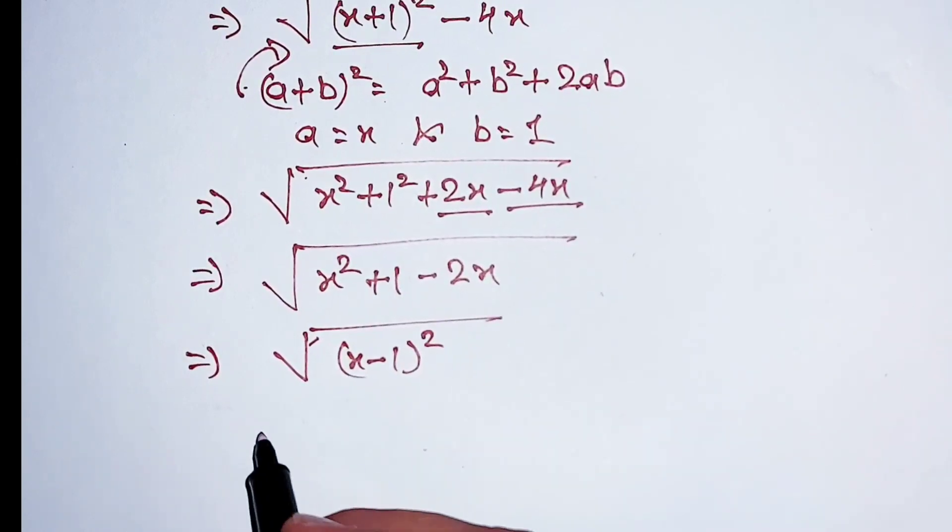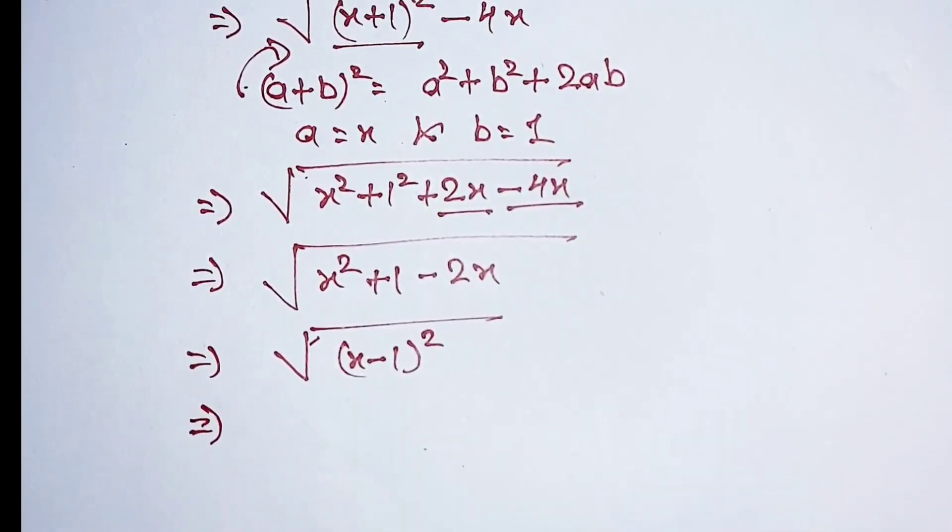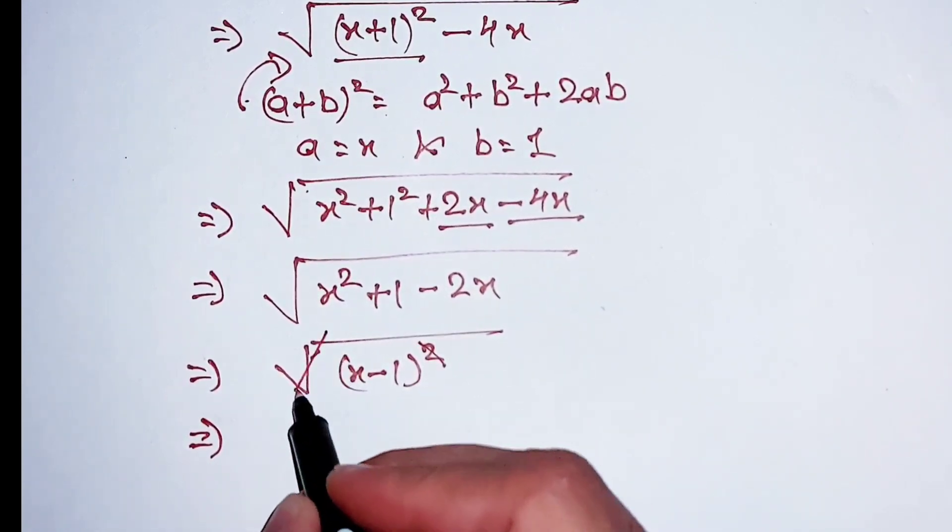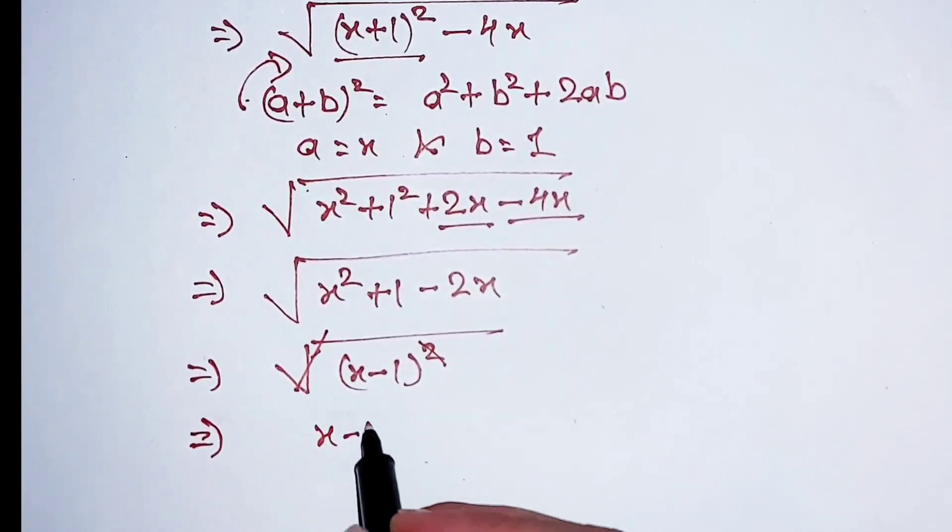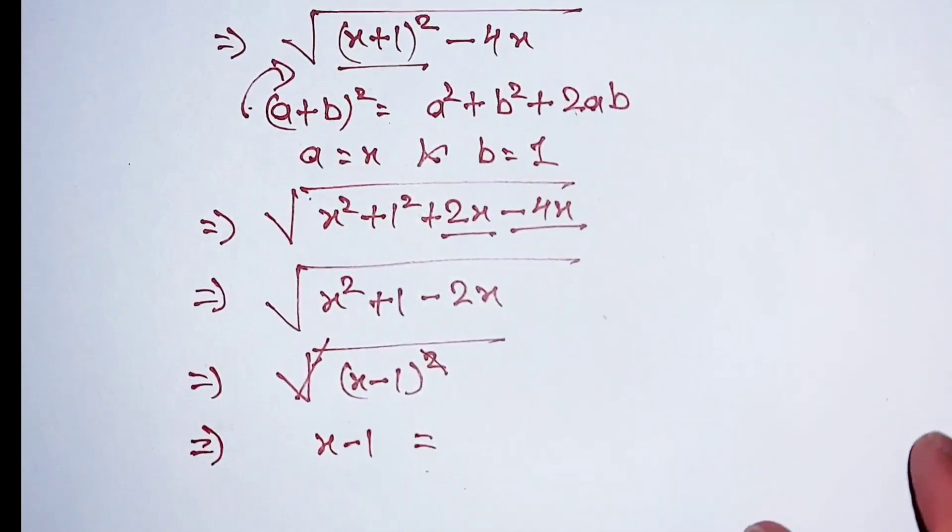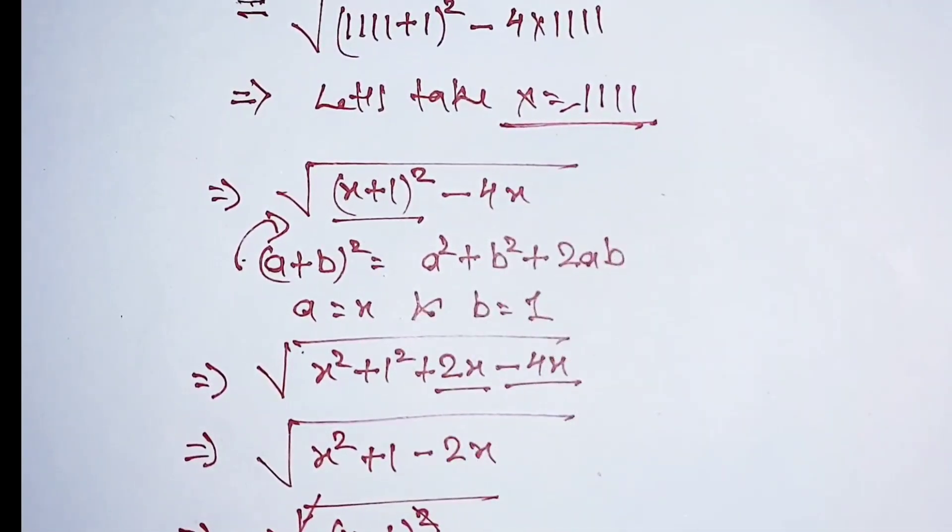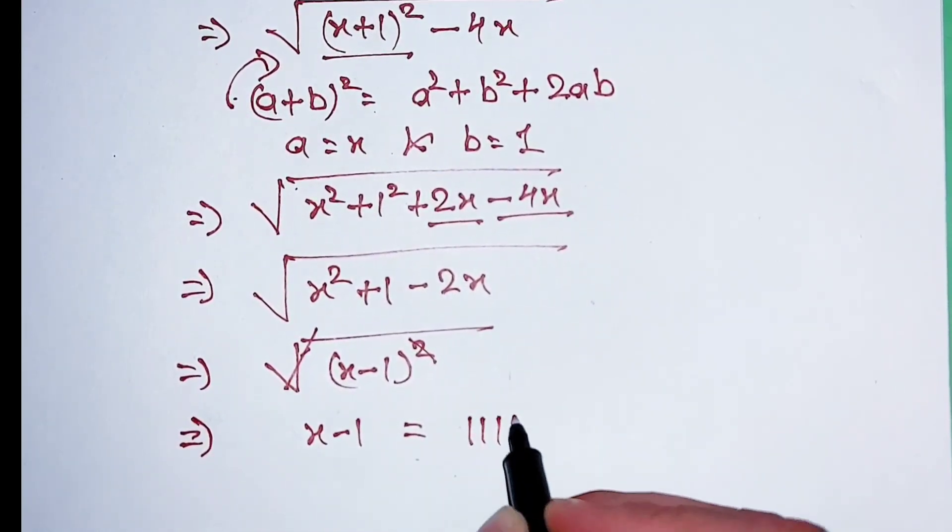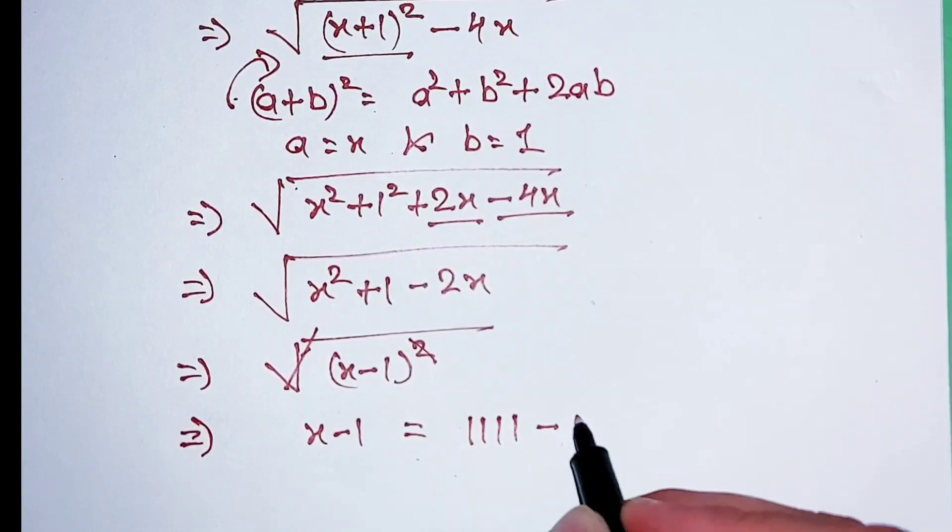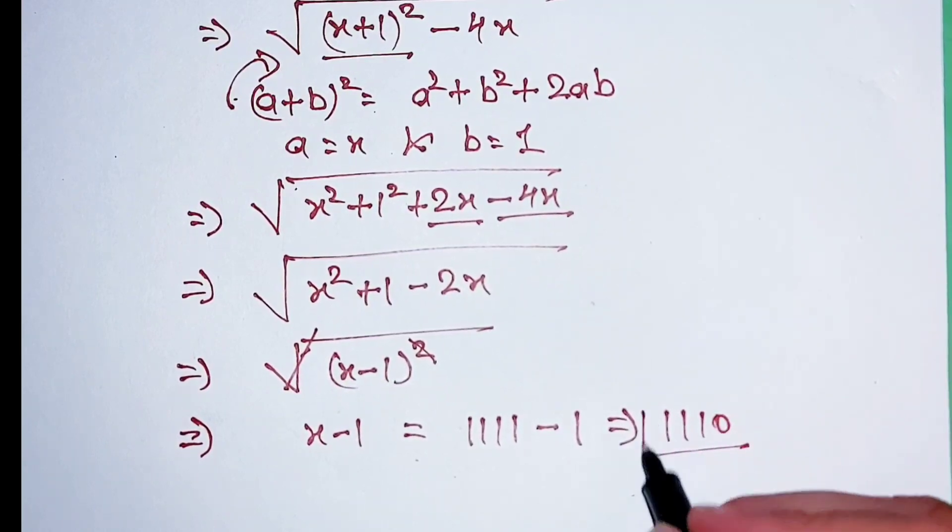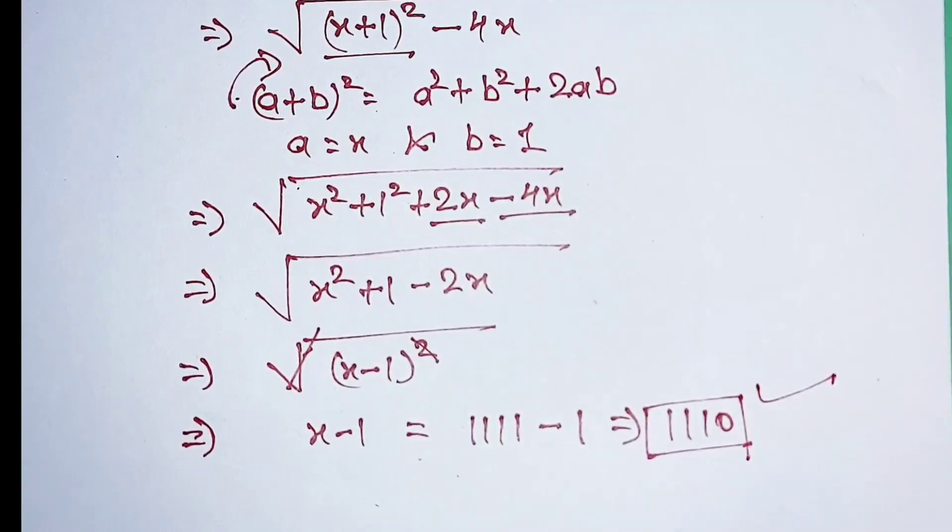Now the square cancels out the square root, giving us x minus 1. The value of x we took is 1111, so x minus 1 equals 1111 minus 1, which equals 1110. That is our final answer.